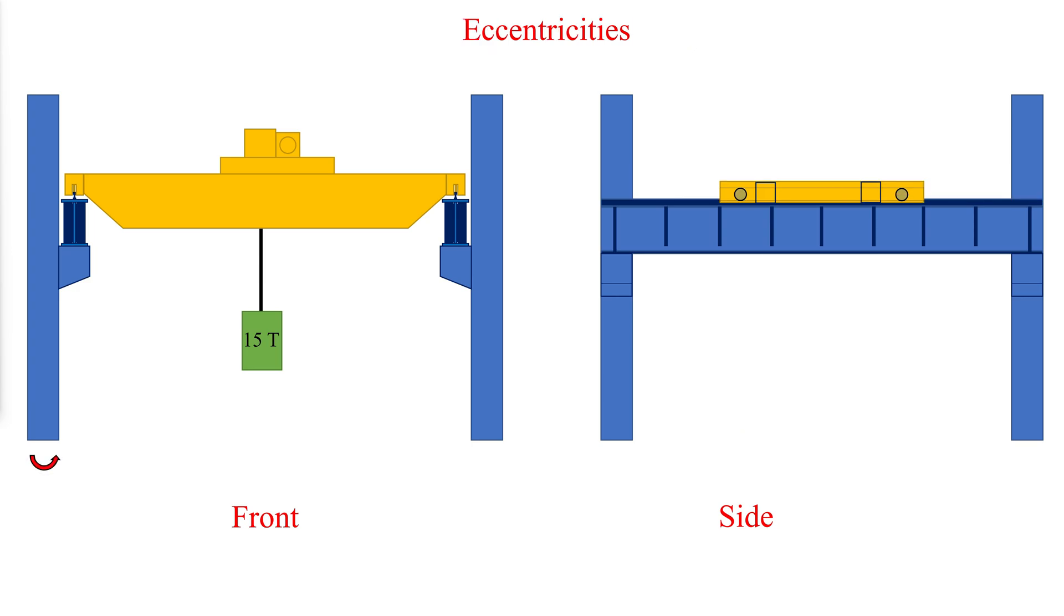The bending of the column due to eccentricity of the crane girder on the column seat must be investigated. The critical bending for this case may occur when the crane is not centered over the column, but located just to one side. This will create eccentricities in two directions.